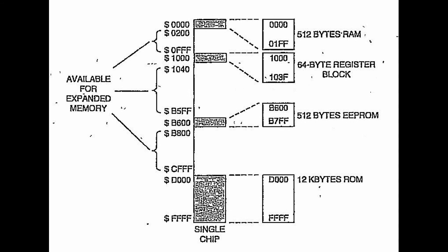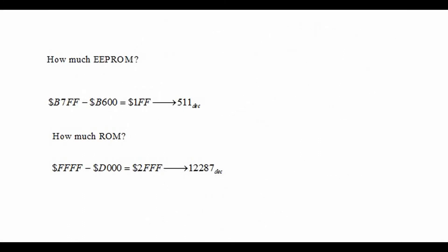Let's say we want to calculate how much EEPROM we have. Notice that EEPROM is contained from B600 to B7FF. We need to do a little hexadecimal math. Let us take hexadecimal B7FF minus B600. Well, that equals 1FF. Of course, we need to convert that to decimal. For that, we need a calculator, and then we can see that's 511 in decimal.